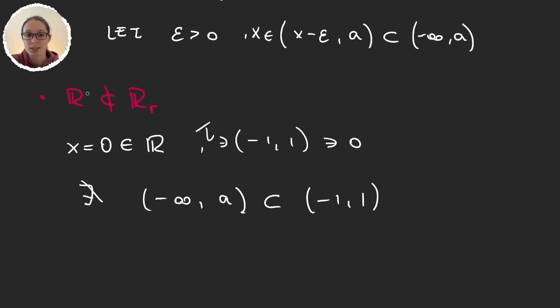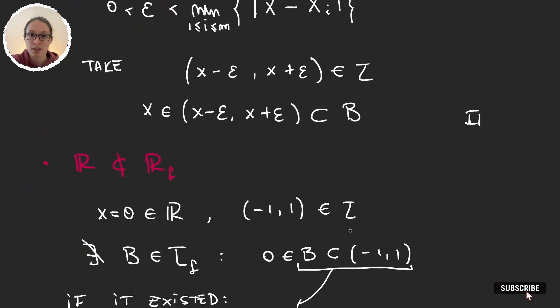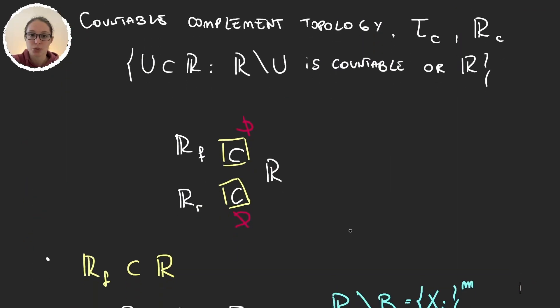This proves that the standard topology is not contained in the ray topology. I know it may sound very counterintuitive to prove this inclusion using the opposite inclusion over elements of the sets. But just check the lemma, and you will understand why we are doing this. So with this, we finished this video, and we have these inclusions.